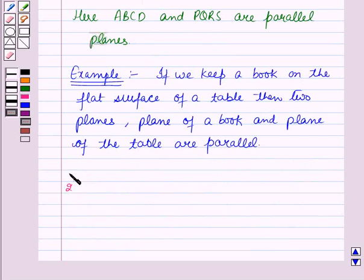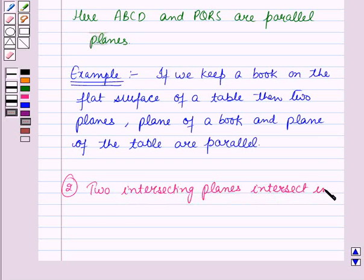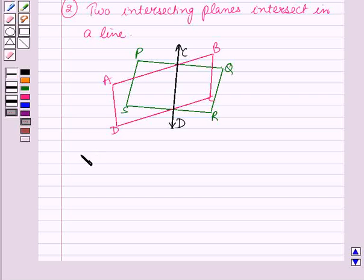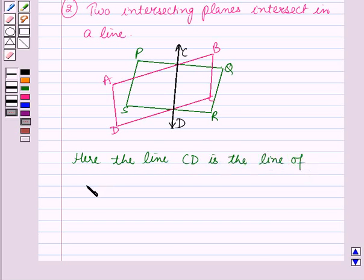Second property is, two intersecting planes intersect in a line. Here, the planes ABCD and PQRS are intersecting planes. So the line CD, which is shown in the figure, is the line of intersection.